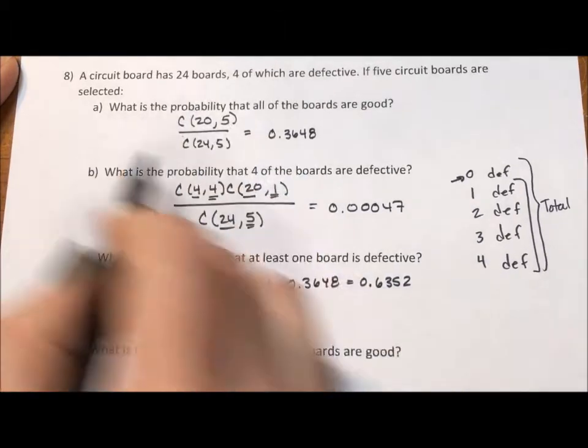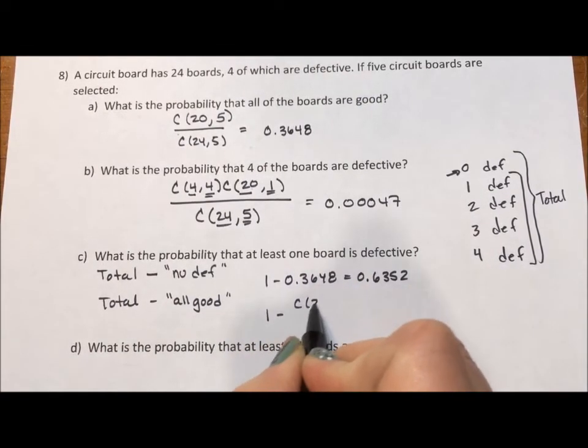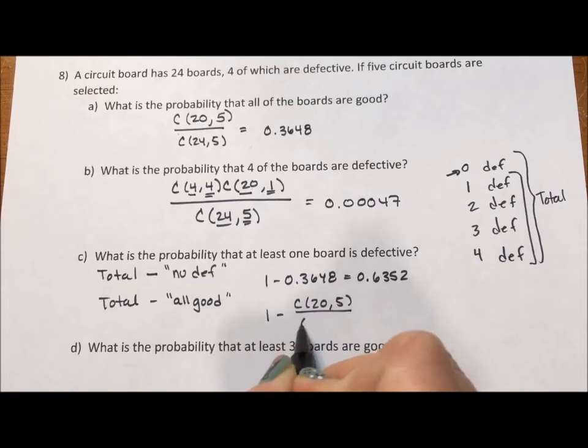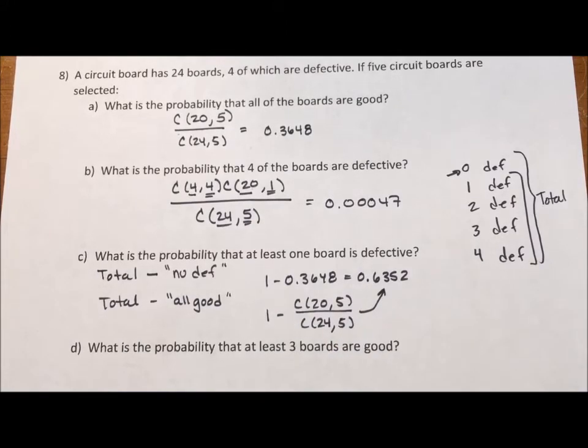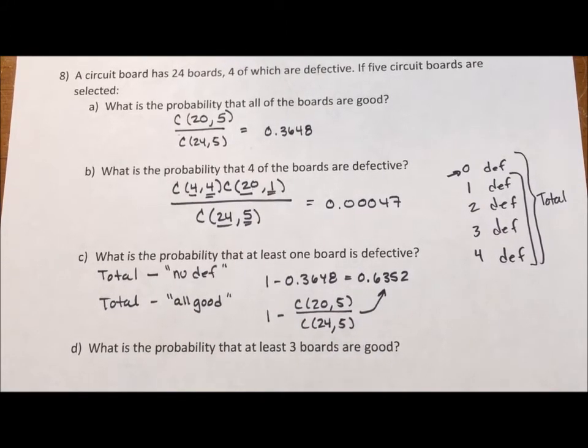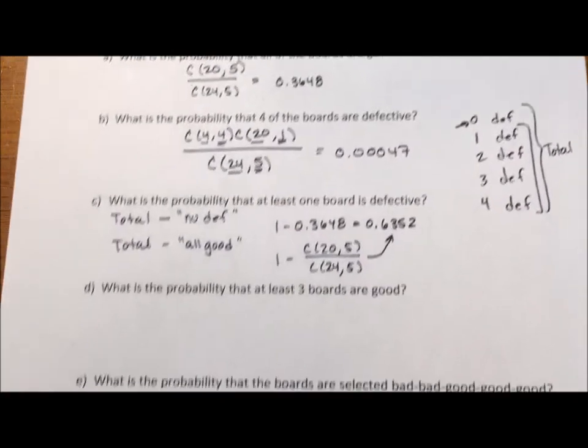Or if I didn't have calculation A, I would say 1 minus the combination of 20 good boards taken 5 at a time divided by the combination of 24 total boards taken 5 at a time. And I'm going to end up with the same answer. Either way, what is the probability that at least 3 boards are good?